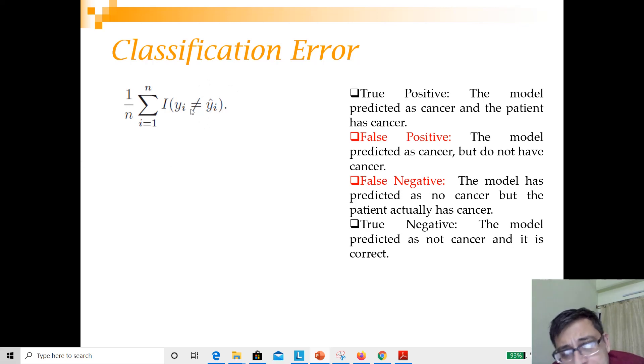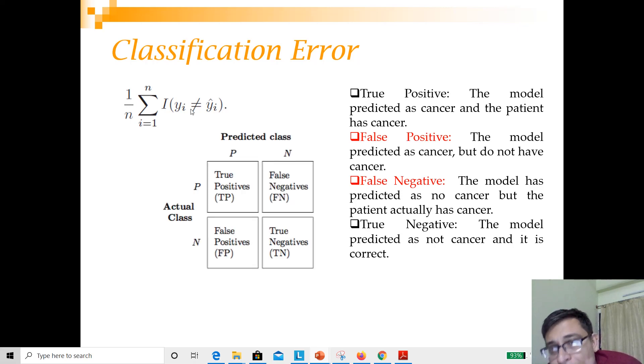You measure the performance using a matrix called the confusion matrix. This is one of the very important tools to measure classifier performance. Here you assume there are two classes: positive and negative. You try to find out how many cases where the prediction is positive and the actual class was also positive. When the predicted class is positive and the actual is also positive, you call that true positive.